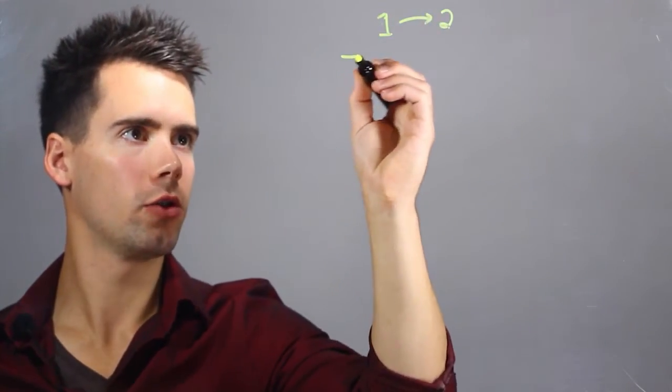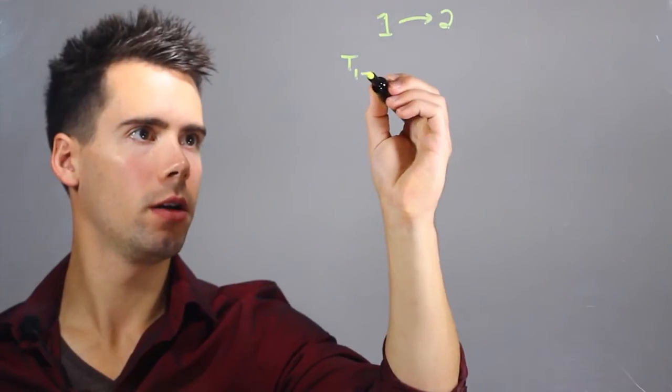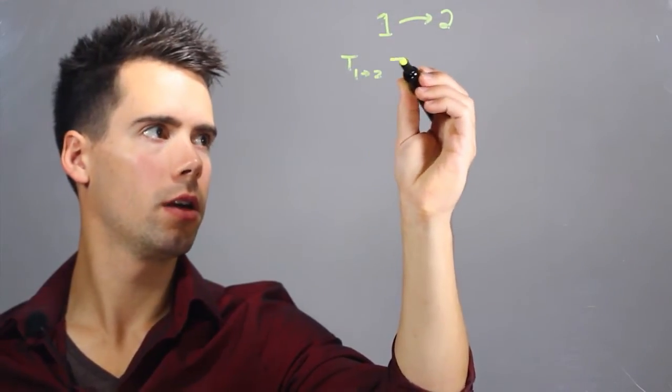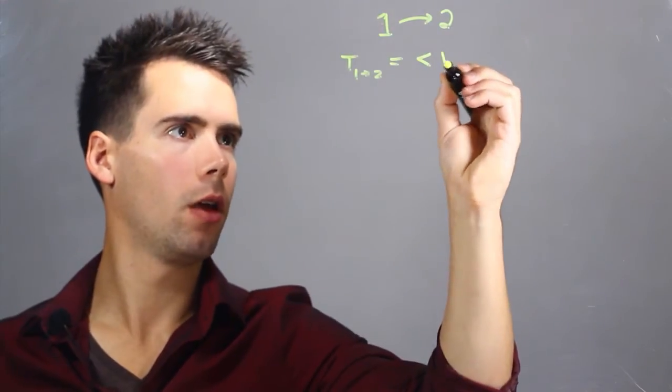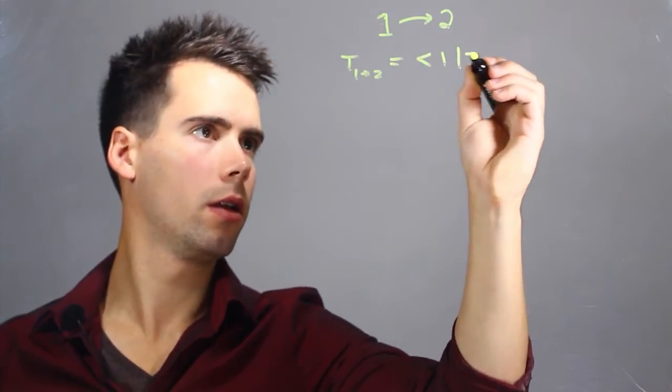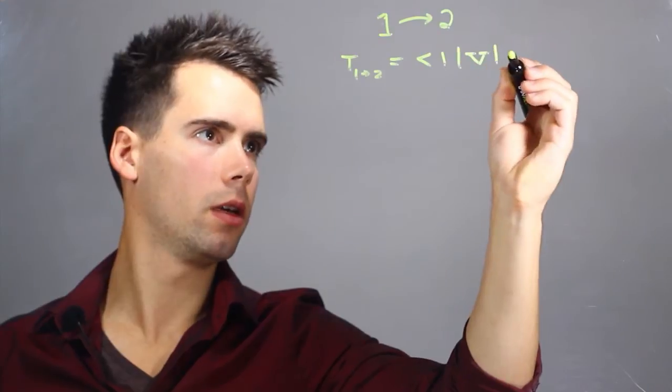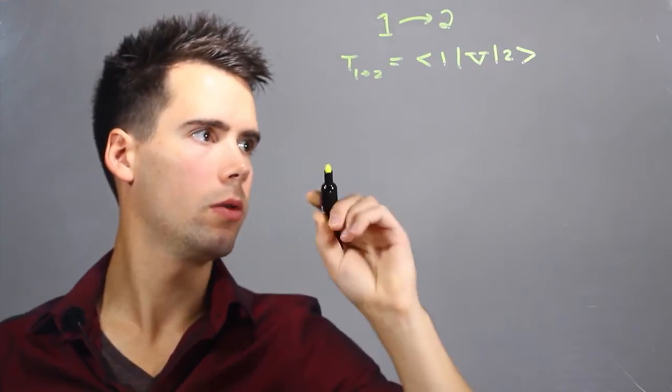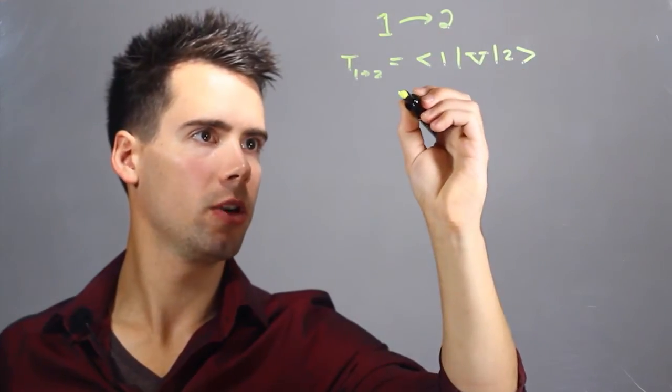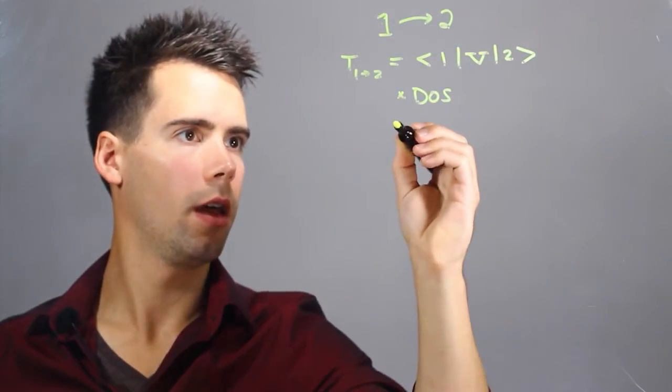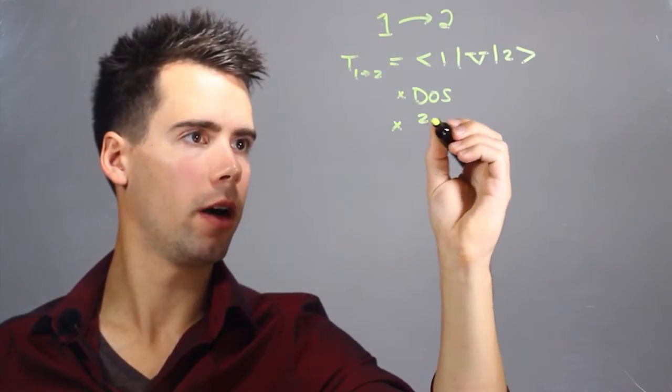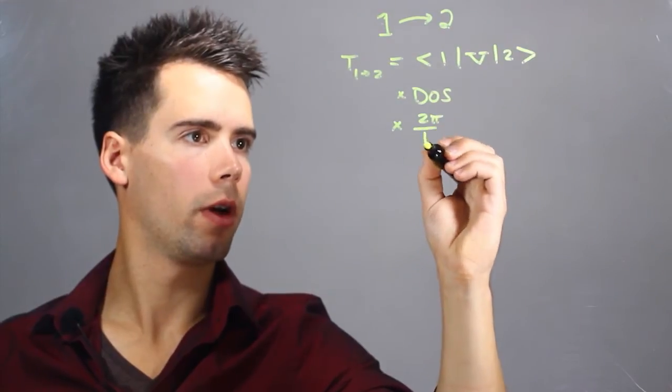Now the equation for transition probability from 1 to 2 can be written as a matrix element, 1v2, multiplied by the density of states, and that is multiplied by 2π over h-bar.